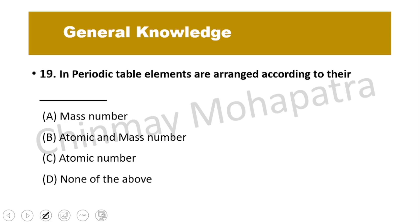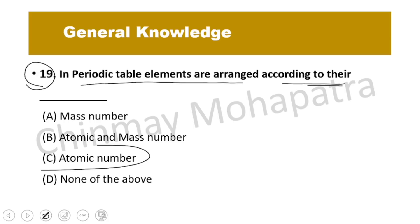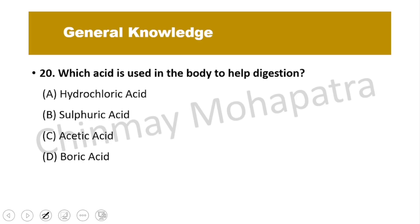Question number 19: In the periodic table, elements are arranged according to their what? They are arranged according to their atomic number. Atomic number is how all elements are arranged in the periodic table.